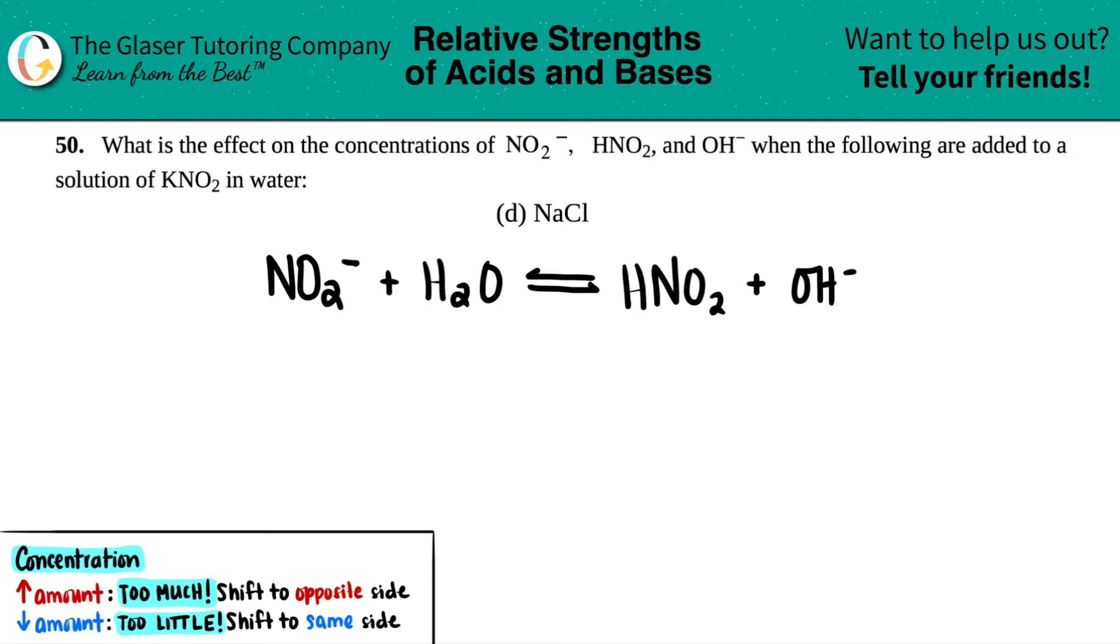Number 50, what is the effect on the concentrations of NO2 minus, HNO2, and OH minus when the following are added to a solution of KNO2 in water? And then we have letter D.